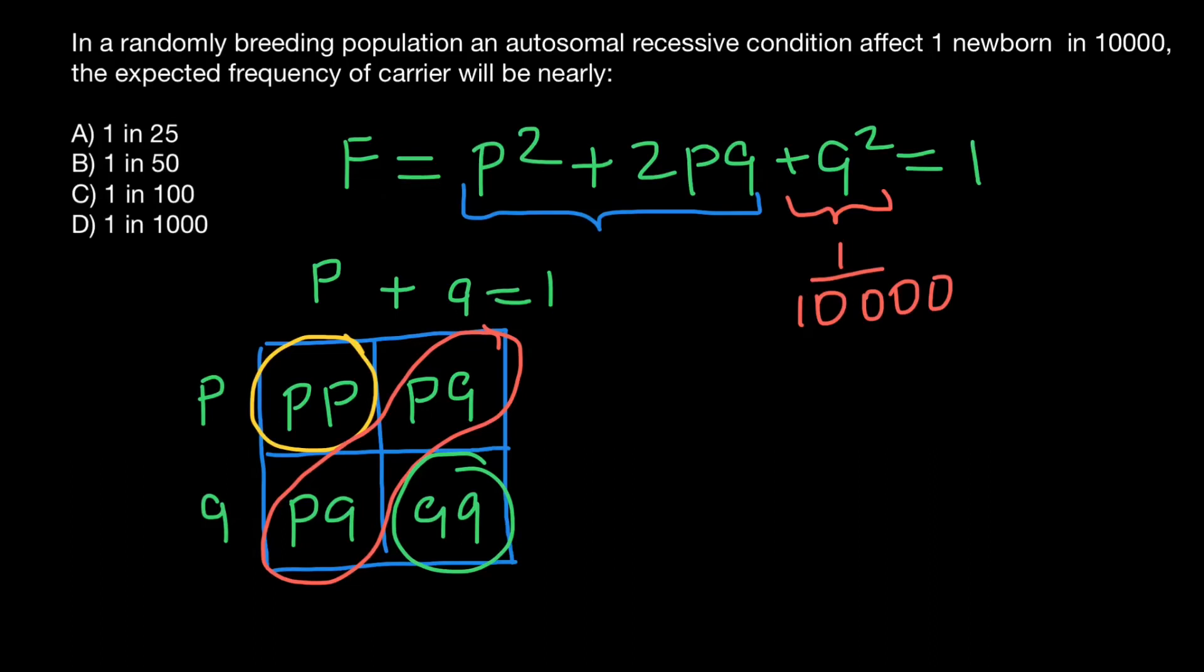So Q, the frequency of the recessive allele, would equal the square root of one over 10,000. So frequency of the recessive allele would equal to one hundredth.